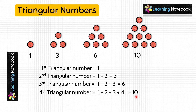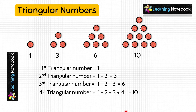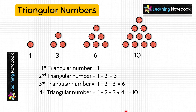So, to find the 5th triangular number, we will add the first 5 numbers. But if I ask you to find the 11th triangular number, then adding the first 11 numbers will take a lot of time. So let me tell you a shortcut method to find any triangular number.